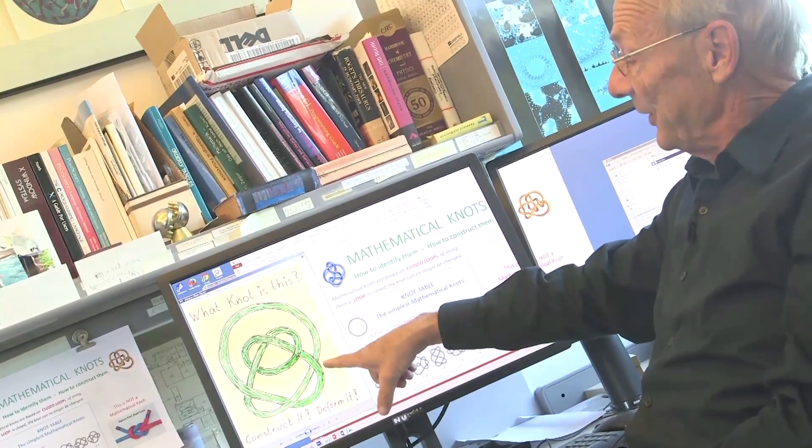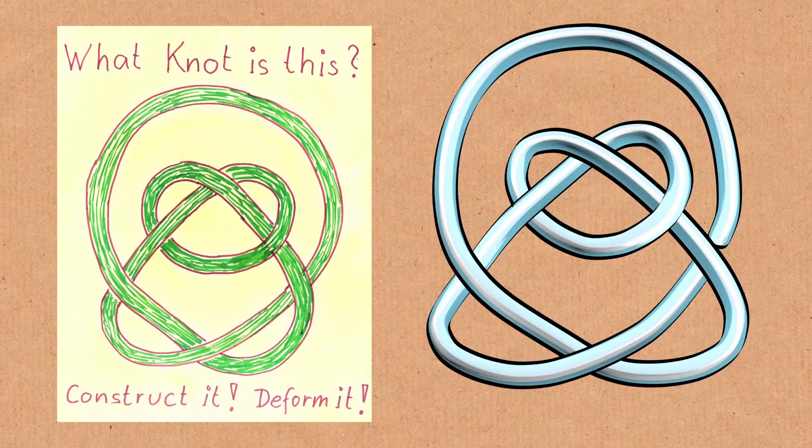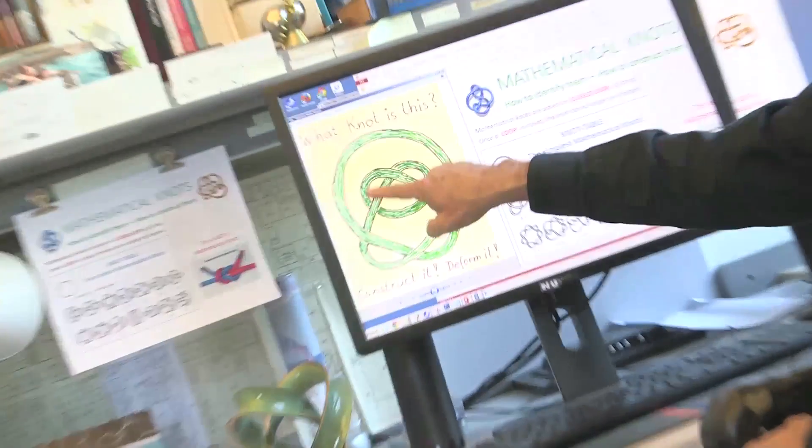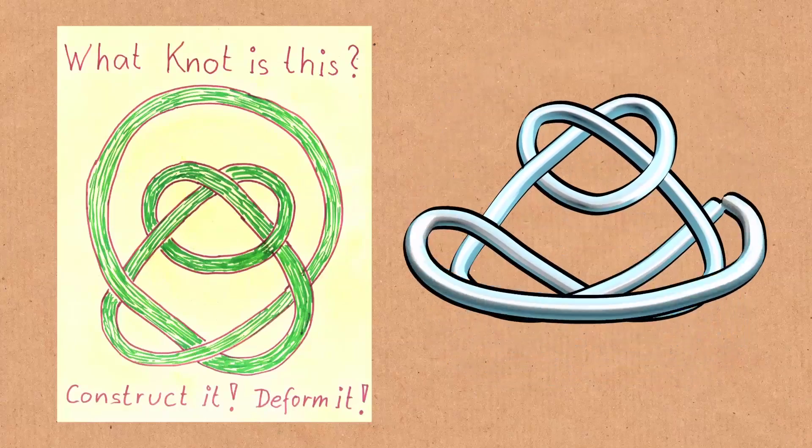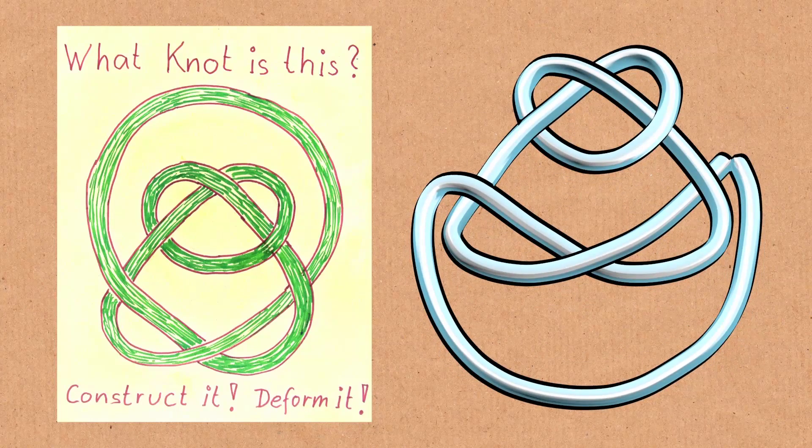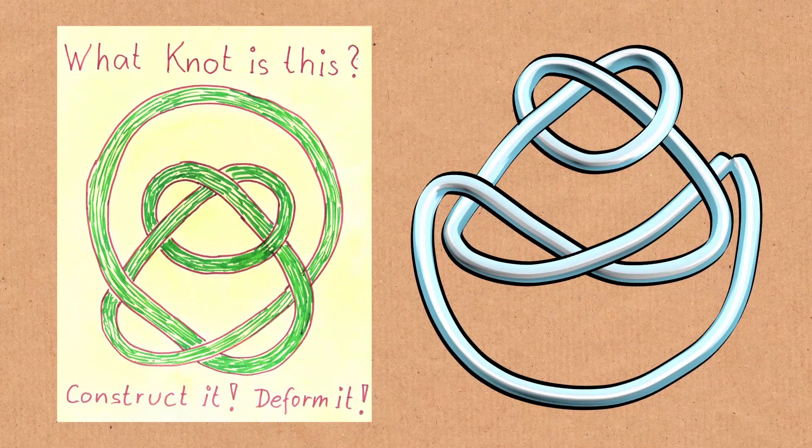Mathematicians call this a composite knot. It's really two trefoil knots stuck together. You can see from here to there it's clearly a trefoil knot, and we can take this loop and kind of flip it down and then we'd have another trefoil knot and it's coupled to this one with these two links.